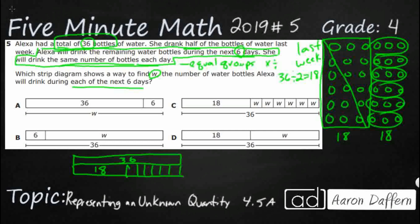We're looking for which diagram shows how much she's going to drink each of the next six days. Well, I could put W in there, but we've already done the work. We know that it's going to be 3. Six sets of 3 right here. That equals 18. Then the other 18, that makes your 36.